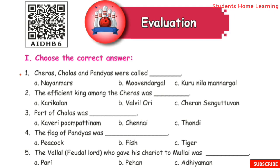Cheras, Cholas, Pandyas — what were they called? Answer: Muvendargal. Second one: The efficient king among the Cheras was Dash.